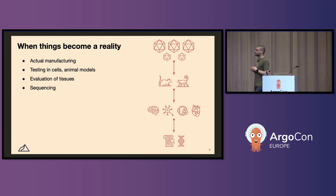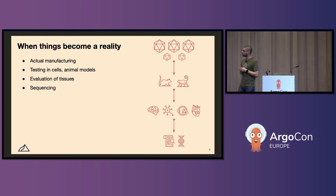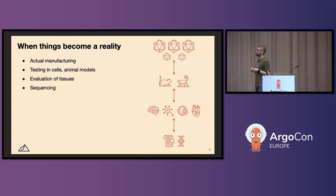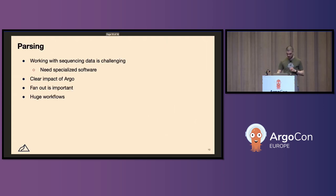Once you have a bunch of sequences, things have to become a reality at some point. You have to take all of those sequences and actually manufacture them in the lab. You then have to test them in cells and animal models, which involves a lot of experimentation. Then we have to evaluate the tissues of those animal models and perform genetic sequencing on them to better understand how the variants we've tested have actually performed. This also looks like a nice workflow, so maybe there's a future in which this is also orchestrated in Argo as well, but we're not there yet.